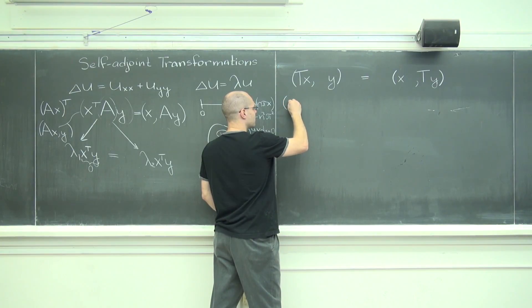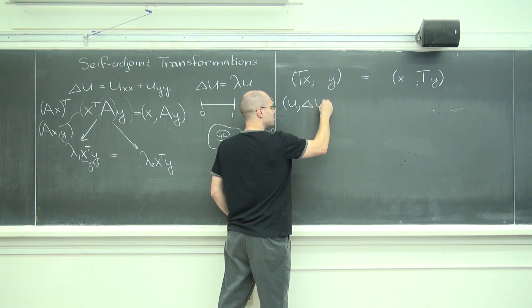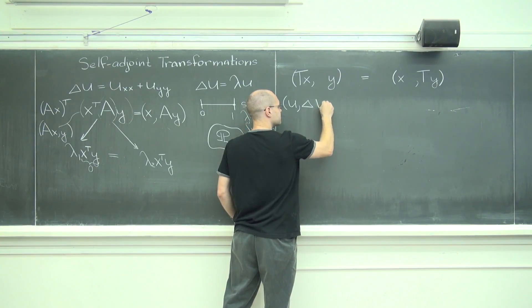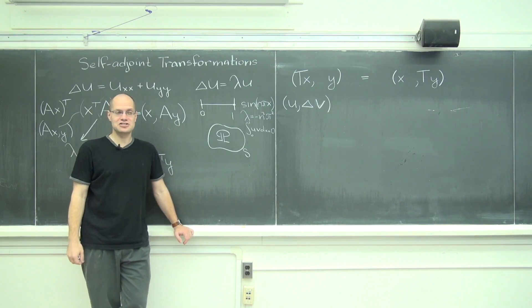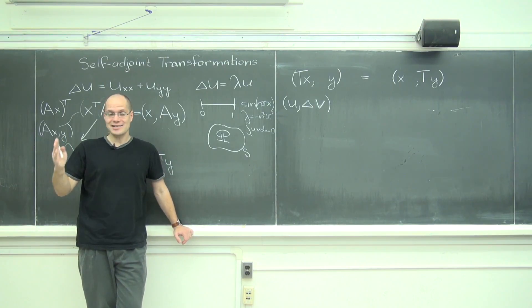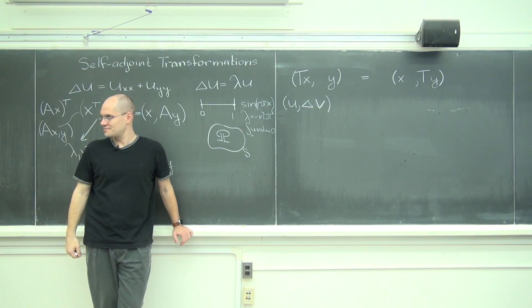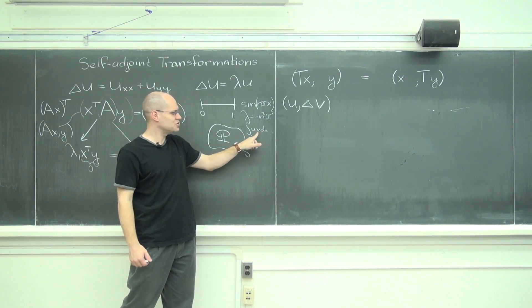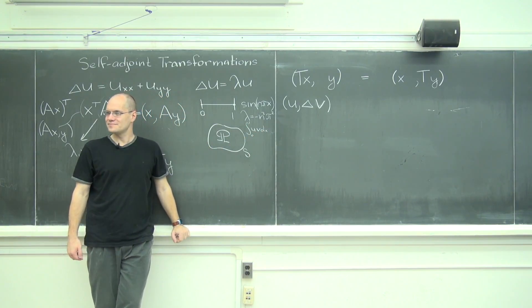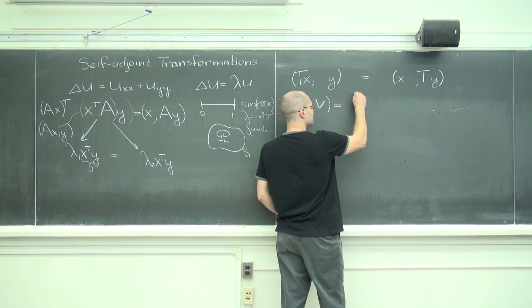Suppose I have a function u and v and I'm dotting u with the Laplacian of v. The question that I should have asked and answered but haven't yet is with respect to what inner product? It's with respect to this inner product. So with respect to this inner product, this equals...